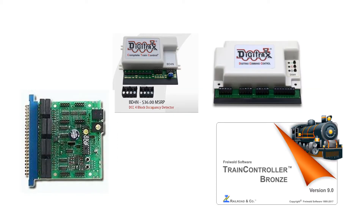There's a lot of information on the internet about Digitrax products. Their manuals are pretty good, if sometimes written in computer jargon rather than plain English. There are a few videos about Train Controller software, and its manual is pretty good also. But I could not find enough information to tell me, a non-expert, how to connect Digitrax and Train Controller all together, especially Digitrax's new BD4N block detector module.